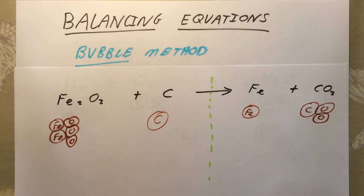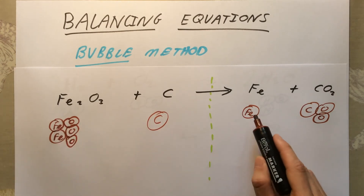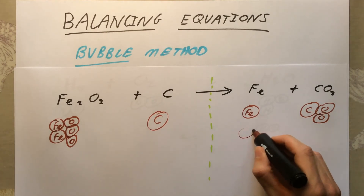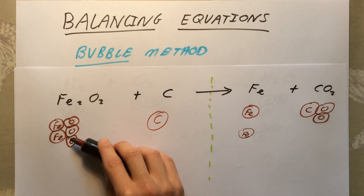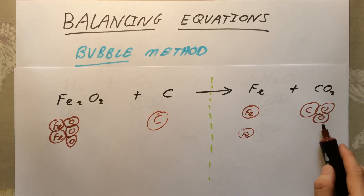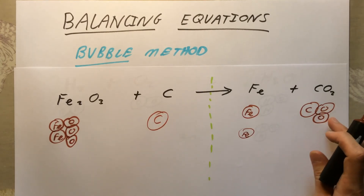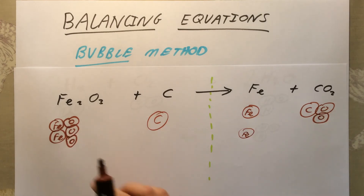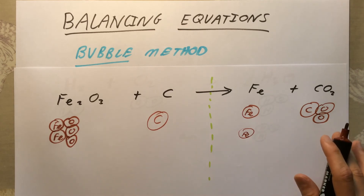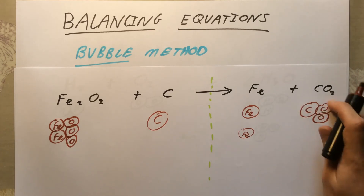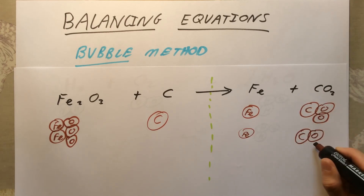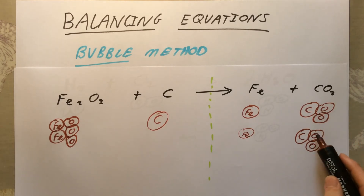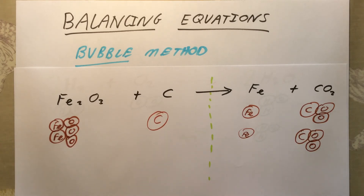Looking at the bubbles, the first thing that springs out is that we've got two iron atoms on the left but only one on the right, so I double up the iron to get a second Fe. Next, we've got three oxygens on the left but only two on the right. This is tricky because three and two don't divide evenly. The approach is to look for which side has fewer oxygens and double up that whole unit — so I add another lot of CO₂, giving four oxygens on the right.